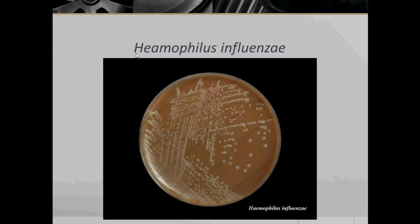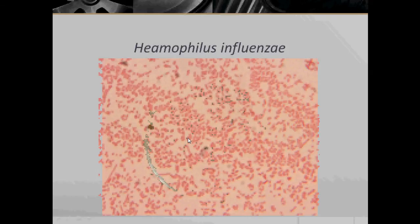Here we can see Haemophilus influenzae growing on chocolate agar. Under microscopic view, they exhibit a school of fish arrangement.